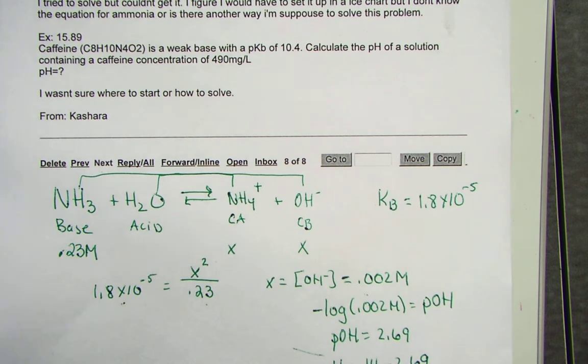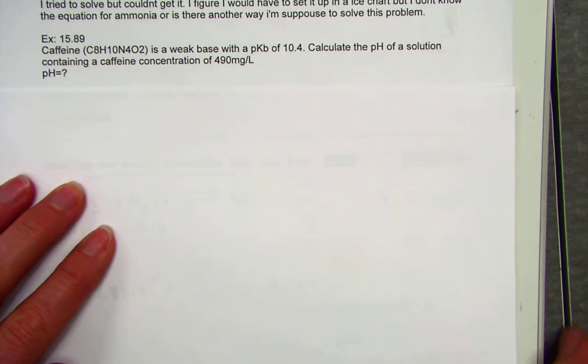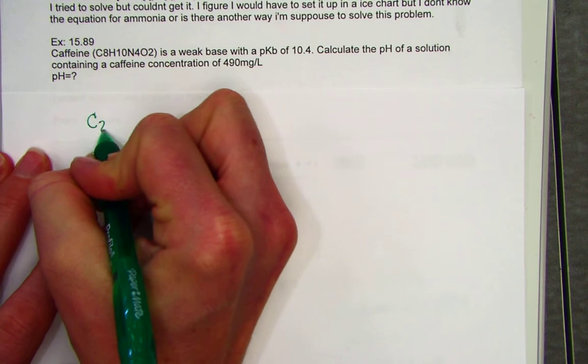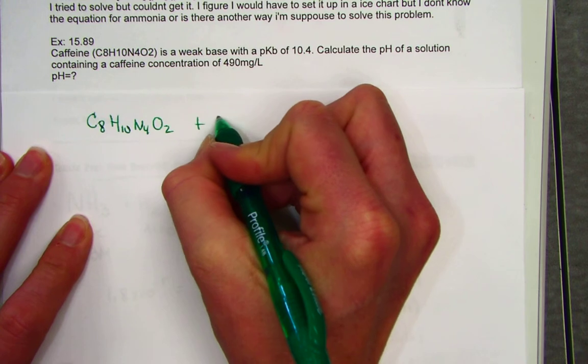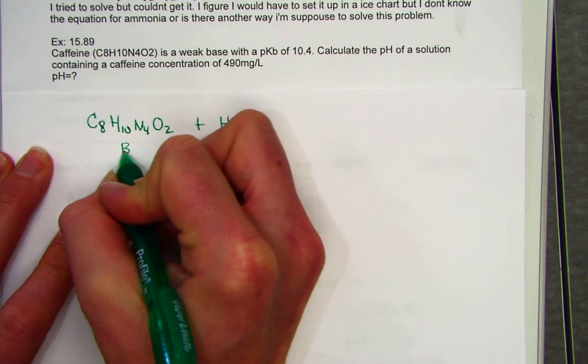I'm going to get a fresh sheet of paper writing down some of the information. I just want to be able to cover this work so I have some room to work for the next problem. So number 58.89. Caffeine is C8H10N4O2. When I place that into water, it acts as a base.